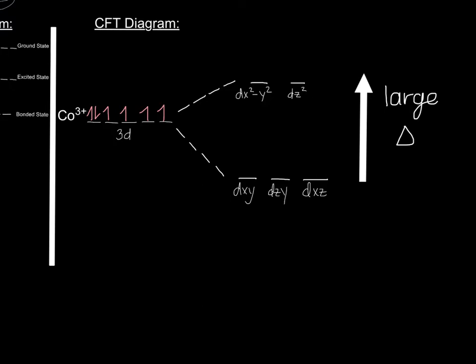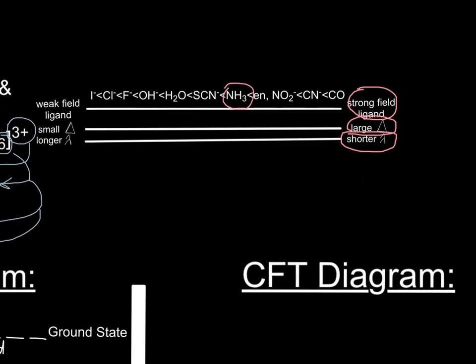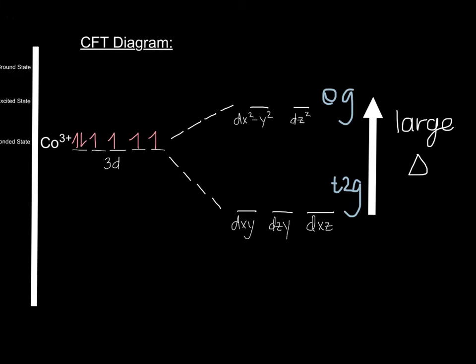In regards to the crystal field diagram, it is important to note that the 3D orbital in the central atom is being split into two sublevels, which are called EG and T2G. If we refer back to the chart, NH₃ is a strong field ligand, which shows that there is a large splitting energy, as demonstrated in the crystal field diagram. This explains that higher energy must be absorbed to promote an electron from the T2G to the EG level. However, in this case, the electrons are all placed in the T2G sublevel. As demonstrated here, the six electrons in the 3D orbital were placed into the dxy, dzy, and dxz components of the T2G sublevel, all paired.